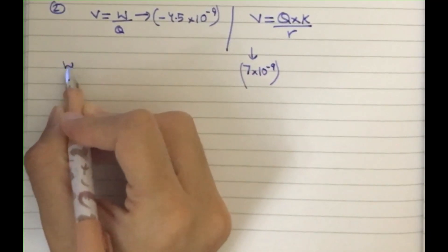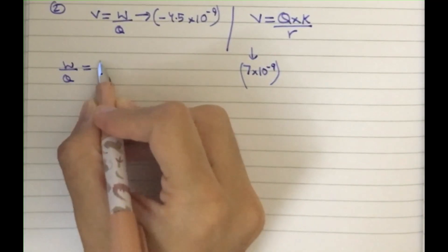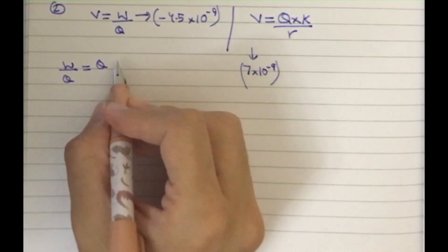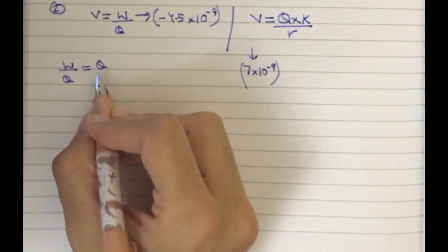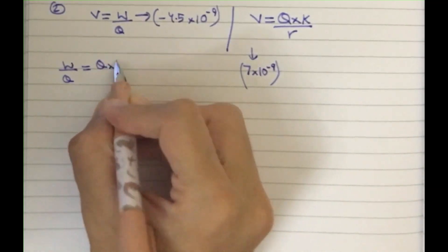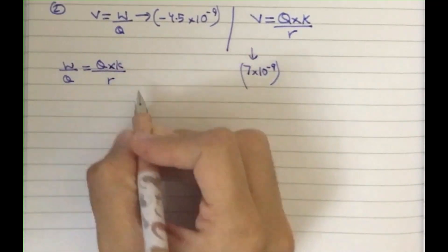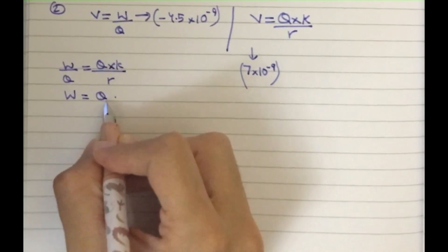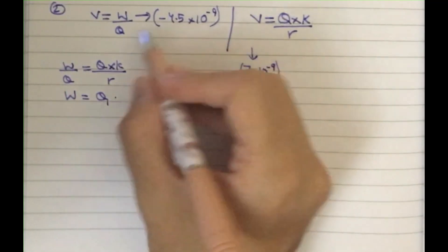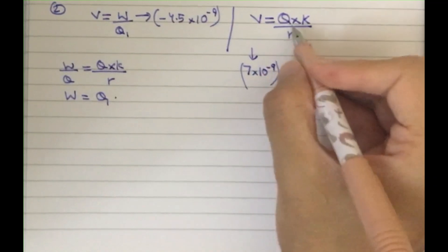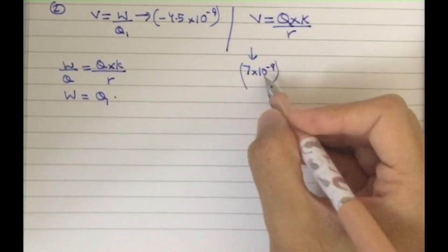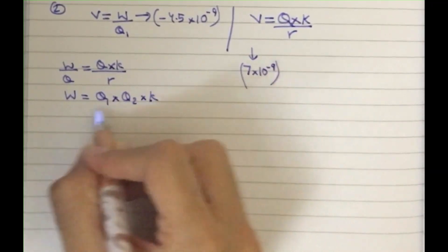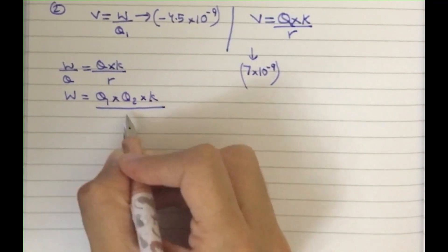We set W divided by Q equal to kQ divided by r, and then W equals Q1 times Q2 times k divided by r. Remember that Q1 is the first charge and Q2 is the second charge.